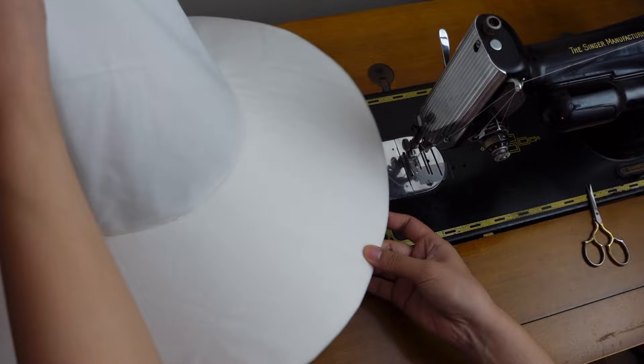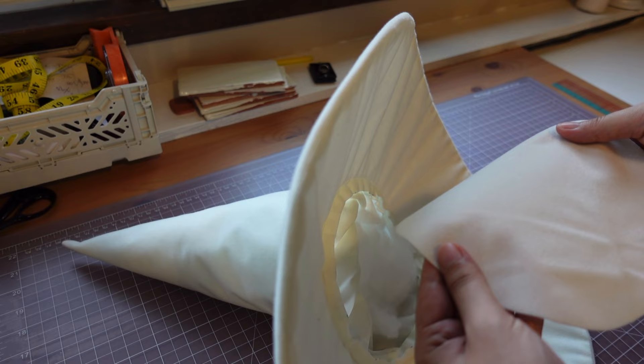I stole some batting from my body pillow that was too fluffy anyways and stuffed it inside the cone. I used the leftover circle to hide the batting inside.